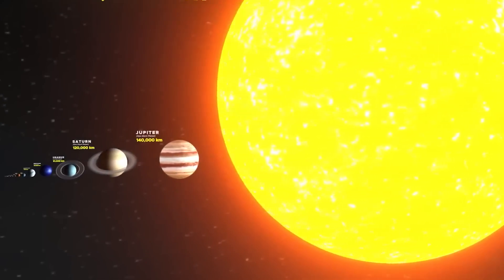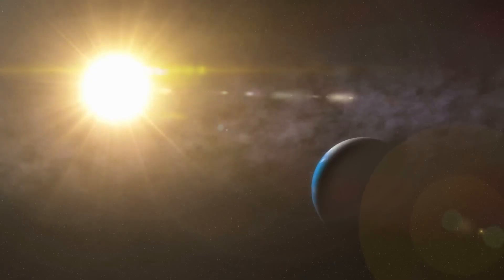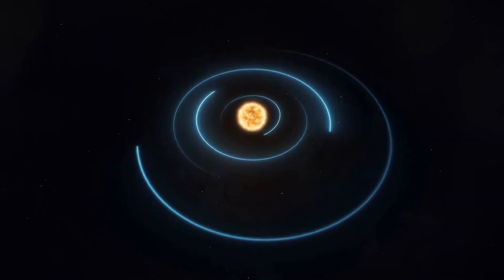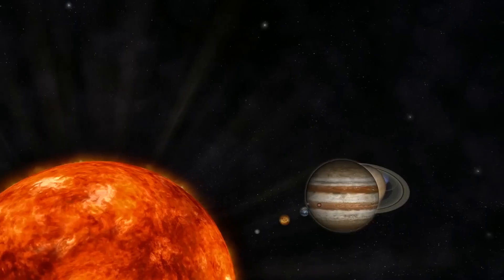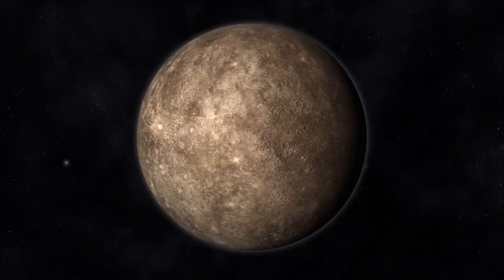However, due to the elliptical orbit of Earth around the sun, the distance can vary between 147 million kilometers at the closest point, perihelion, and 152 million kilometers at the farthest point, aphelion.